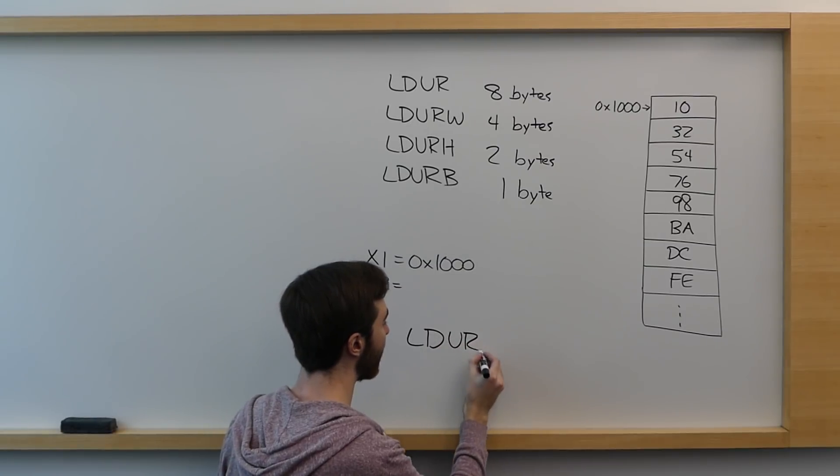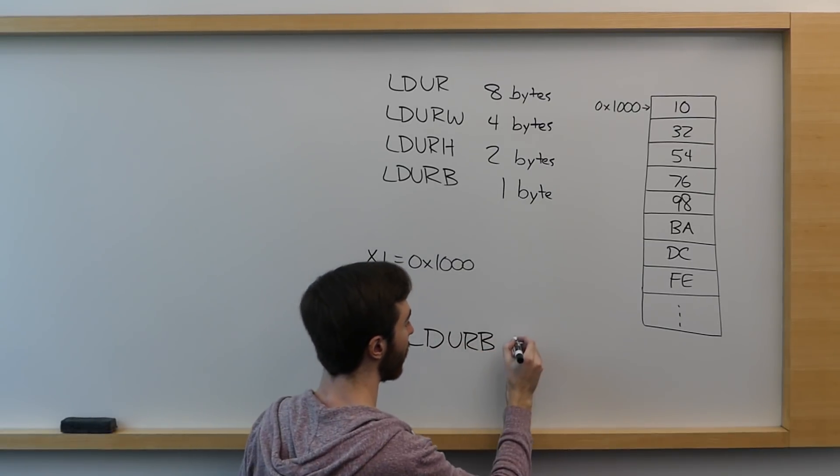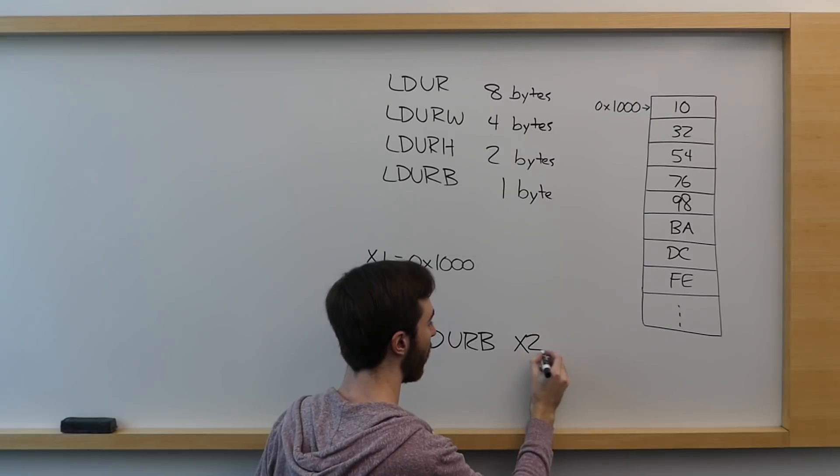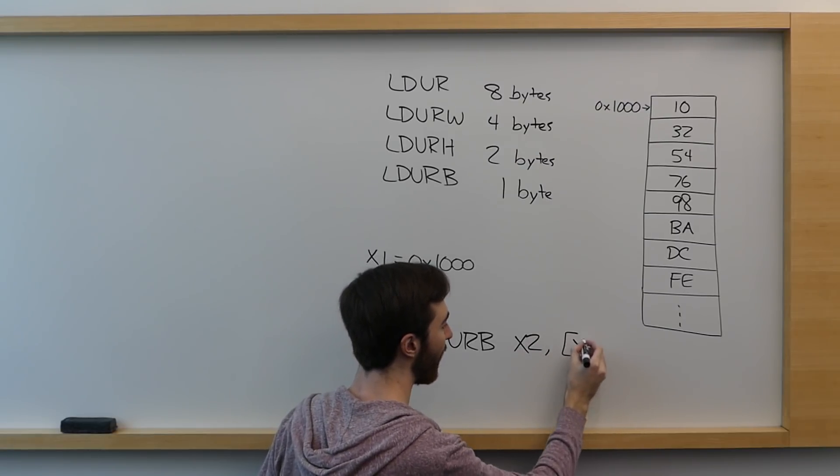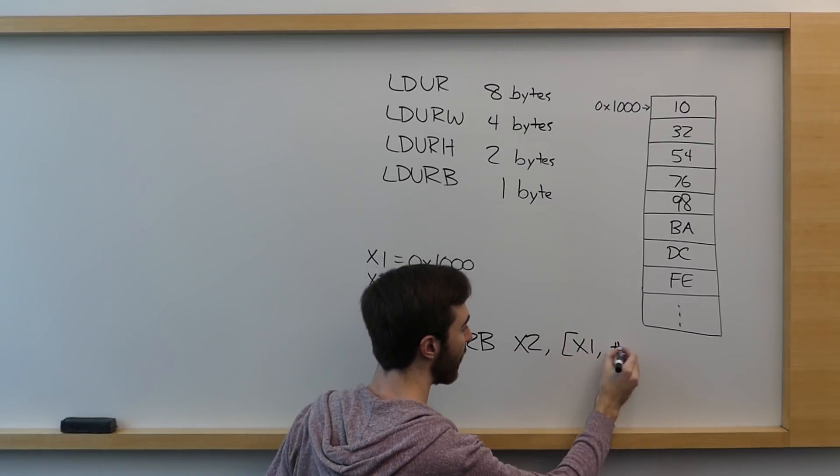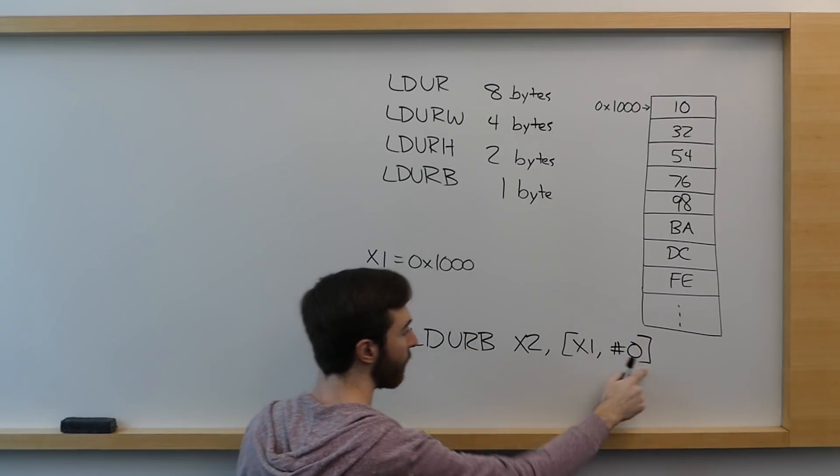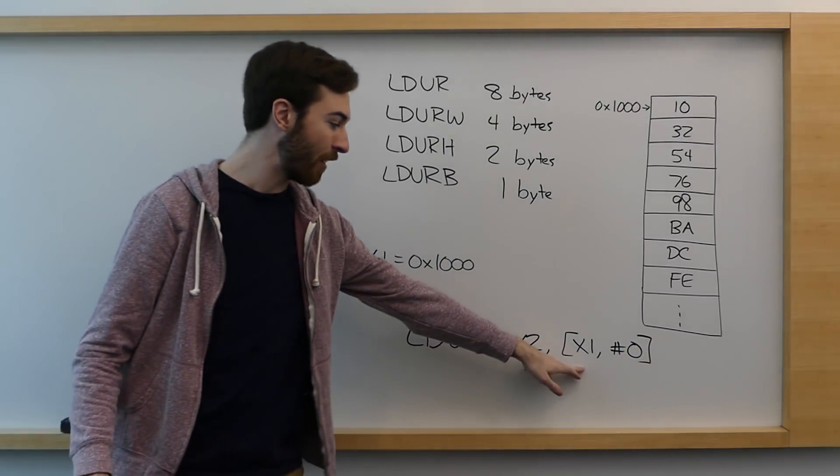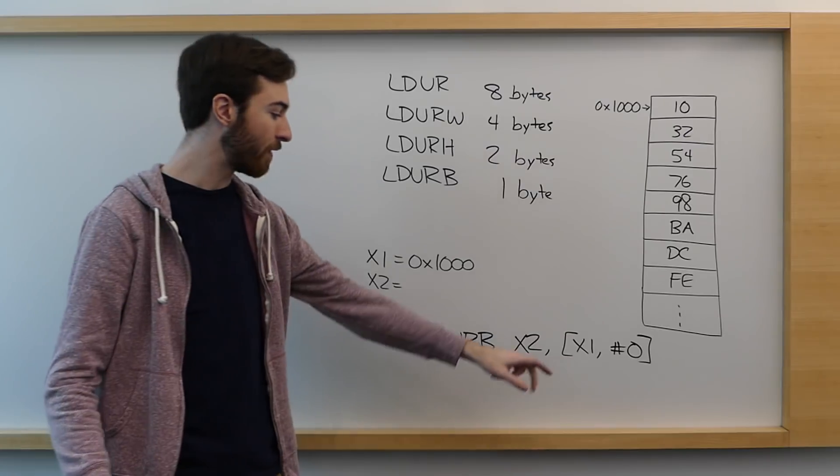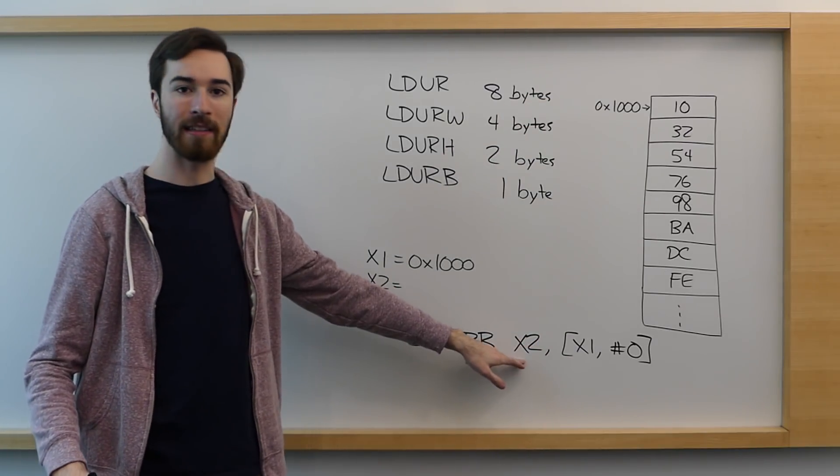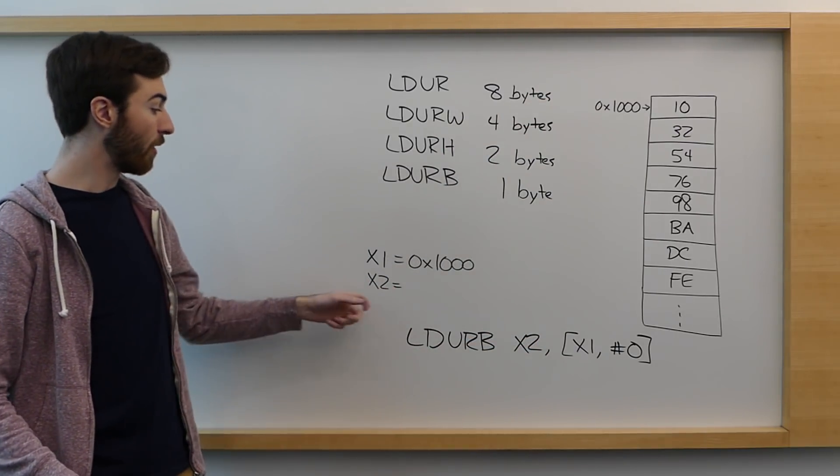If we start off with, say, LDURB, the first register is the register that you are loading to, and then you create the address that you're loading from the exact same way. It will take the value in this register and add the appropriate offset and store the number that it finds in register 2.